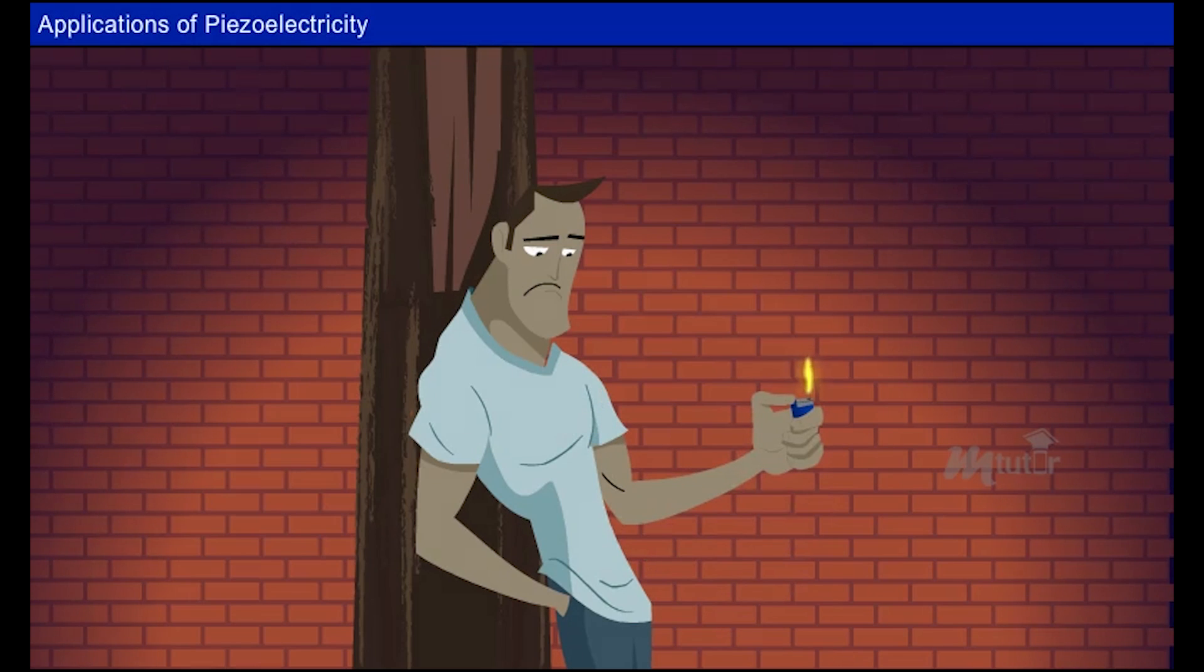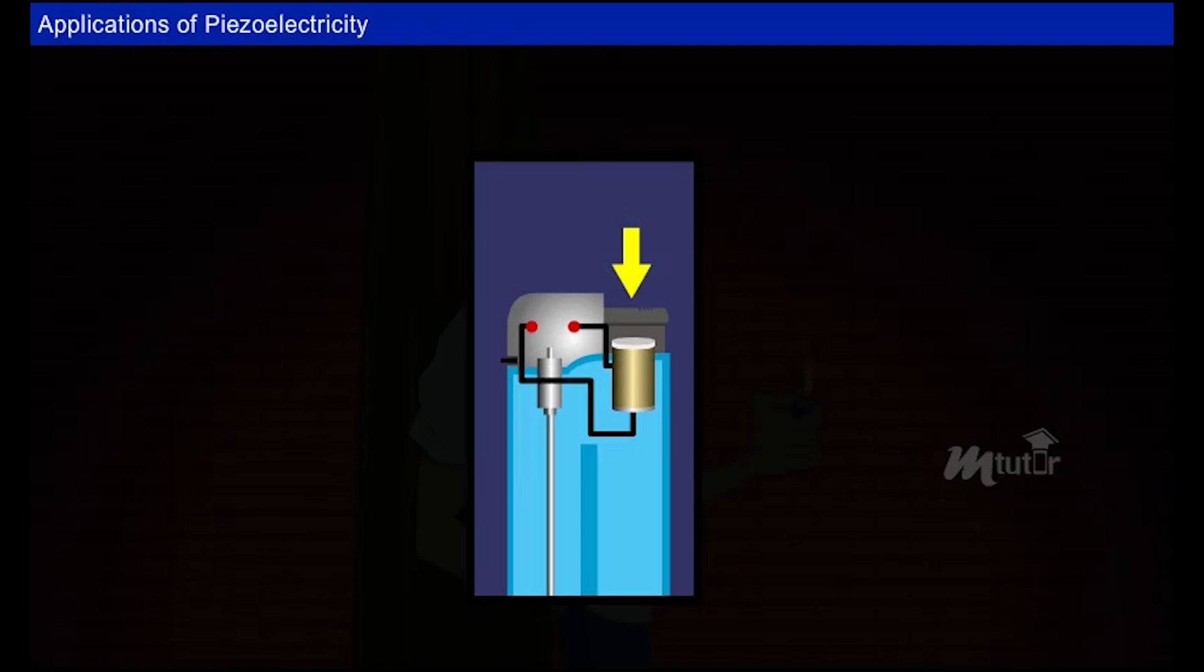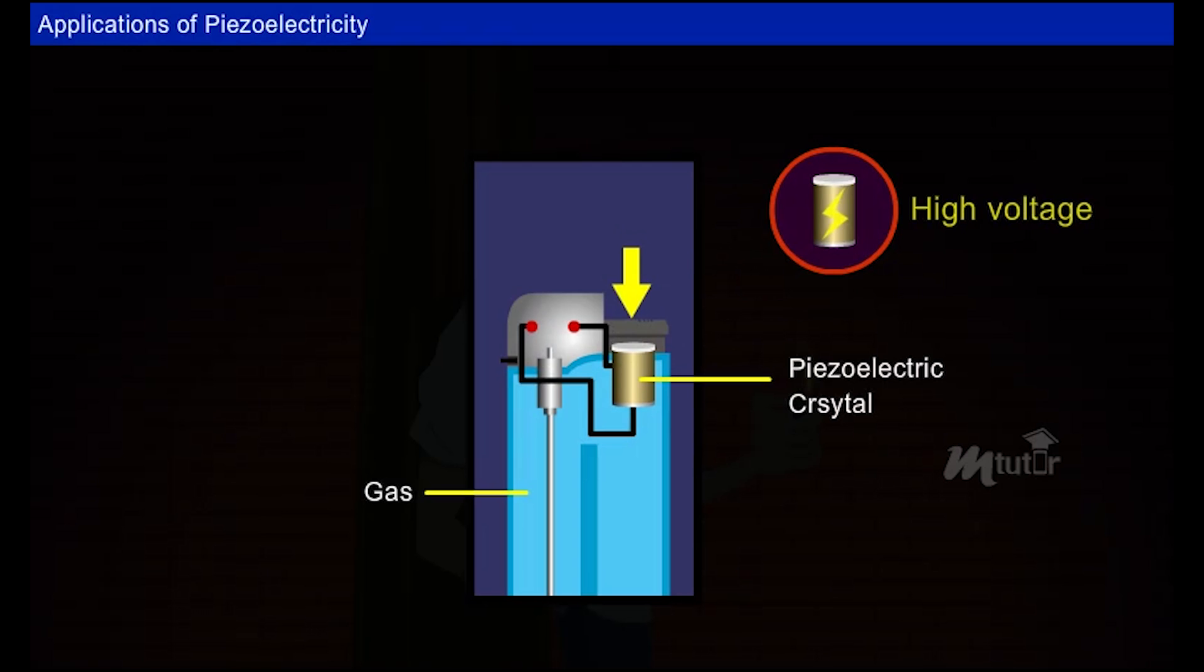Another interesting application is the cigarette lighter. Pressing the button causes a spring-loaded hammer to hit a piezoelectric crystal. This produces sufficiently high voltage due to which an electric current flows through a small spark gap, thus heating and igniting the gas.